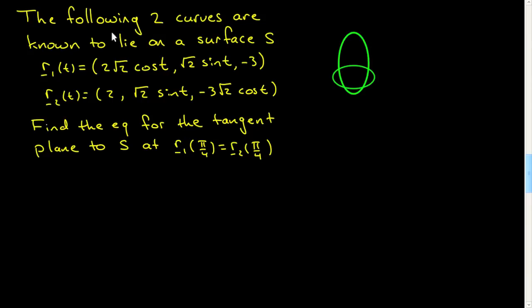We're told that the following two curves are known to lie on some surface S. These curves are given in parametric form R1 and R2 of t, and these are curves in R3. We're told they lie on some surface S, and we're asked to find the equation for the tangent plane to the surface at the point where the curves intersect.